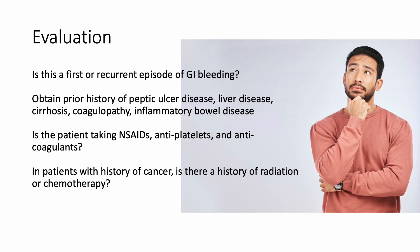Patient assessment and hemodynamic resuscitation should be performed simultaneously in a patient with a lower GI bleeding. The questions to ask during initial evaluation include: is this a first or recurrent episode of GI bleeding? Does the patient have any prior history of peptic ulcer disease, cirrhosis, coagulopathy, or inflammatory bowel disease? Is the patient taking NSAIDs, antiplatelets, or anticoagulants?